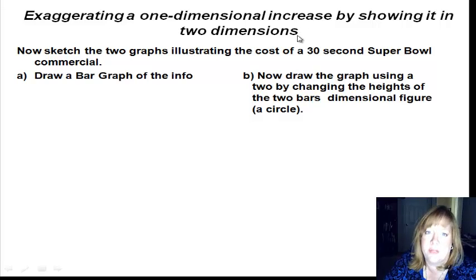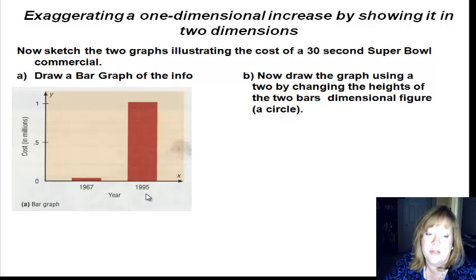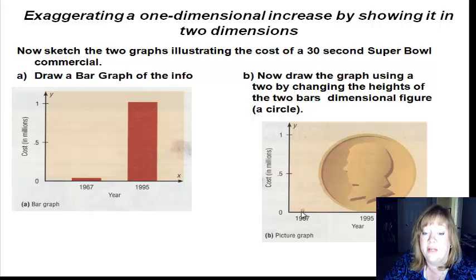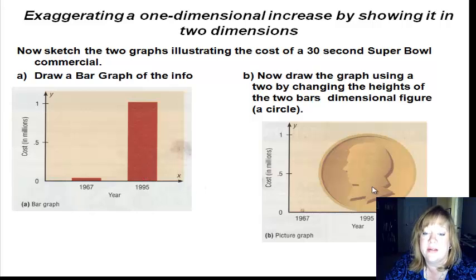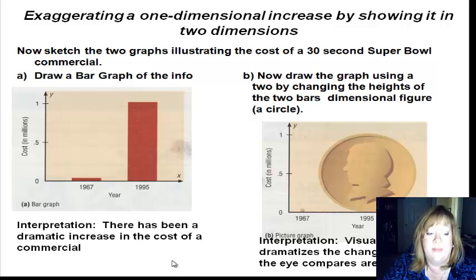Exaggerating a one-dimensional increase by showing it in two dimensions is yet another way to mislead people. This bar graph shows the cost in millions of a Super Bowl commercial — you can see it's gone up over a million dollars since 1995. But look how dramatically different it appears when shown in two dimensions. Your eye as a human will look at areas instead of looking at height. The height is supposed to show the proportional difference, but when you use an area like a circle, it makes the change much more dramatic. Visually, this dramatizes a change because the eye is comparing areas.